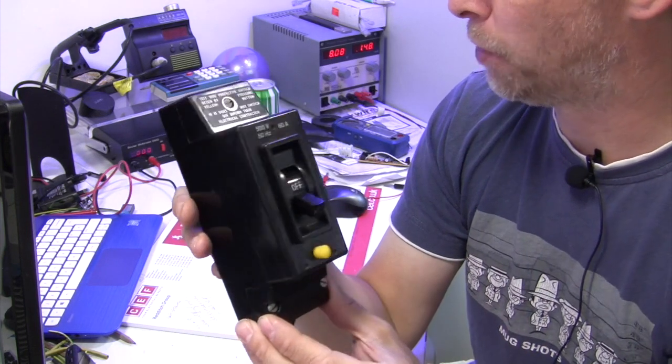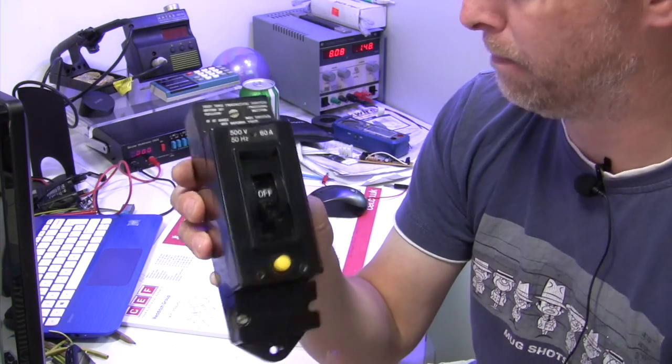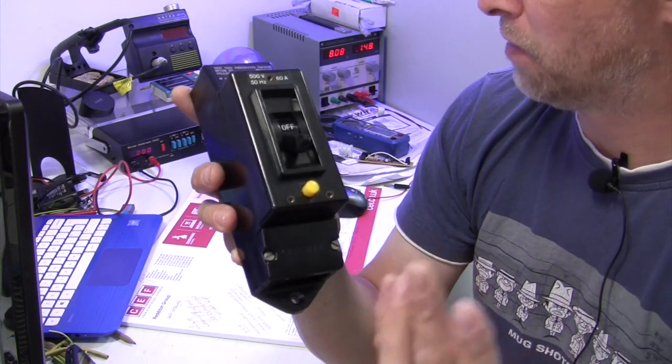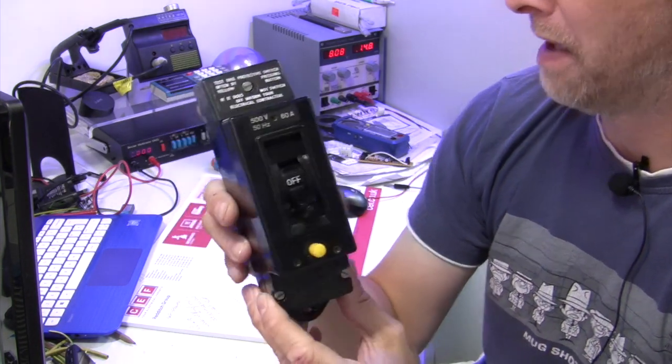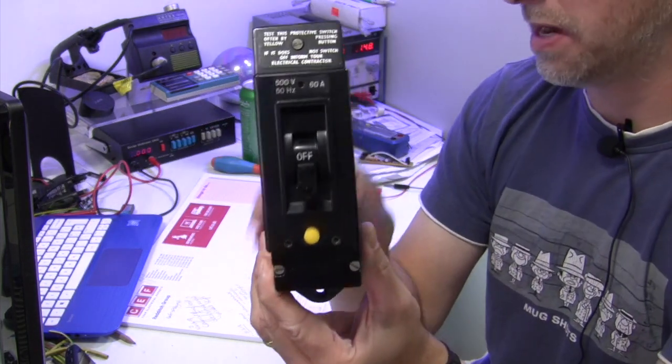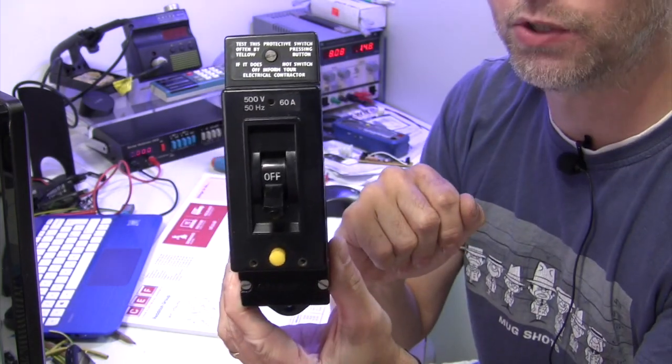This particular one is made by Crabtree and is a rather nice example, in pretty good condition considering it's almost 40 years old. So today let's have a look at what this thing is and why they fell out of favour at the beginning of the 1980s. I think when the 15th edition wiring regulations came in, although I was only 7 then so I can't be too sure about that.